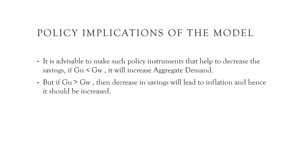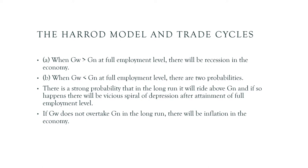We have to go for an increase or decrease in savings depending upon whether the natural growth rate is more or less than the warranted growth rate. This will lead to an increase or decrease in aggregate demand. We also have to look into whether there is inflation or deflation in the economy, and the effects of one type of growth rate dominating the other on aggregate demand.